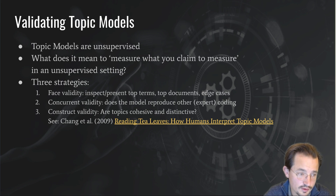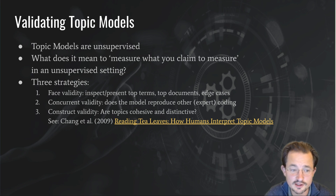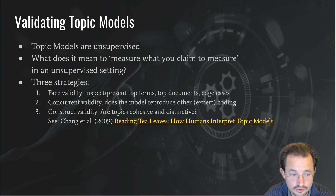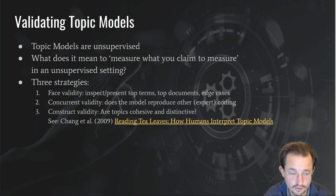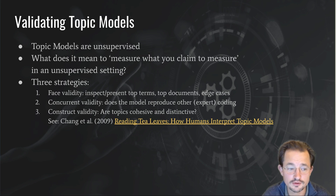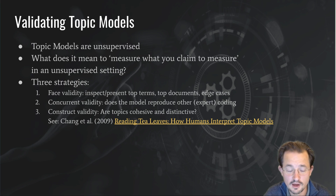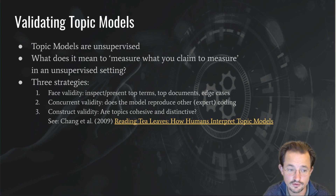You sort of do this when inspecting the top terms, but Chang et al. have written a very nice paper called 'Reading Tea Leaves: How Humans Interpret Topic Models,' in which they introduce crowd-coding experiments where you show people a number of words — four selected from one topic and one from another — and if humans can consistently pick out the odd one out, then apparently that topic is coherent. If they can't, it's not a coherent topic. They have a similar experiment for distinctiveness.